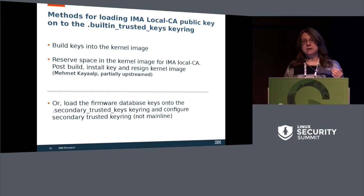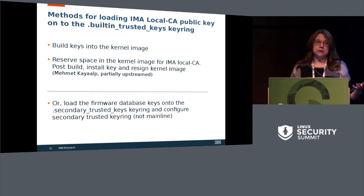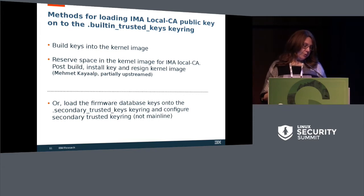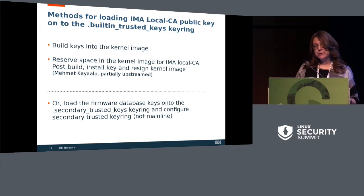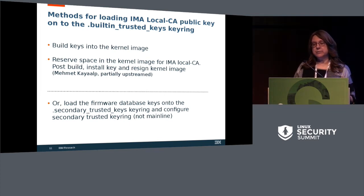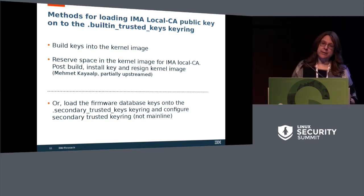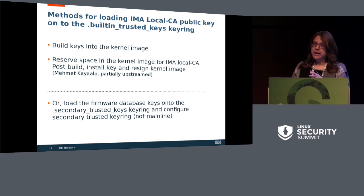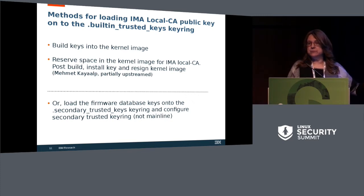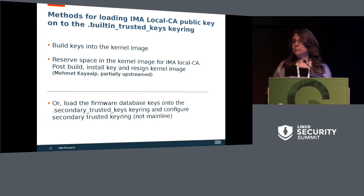Once you've installed the keys, you've modified the kernel image, and therefore need to re-sign the kernel image. The third way of being able to verify keys to put them onto the IMA keyring is not by adding them onto the built-in trusted keys, but by adding them to the secondary keyring. There are out-of-stream patches that do this. But if we bring in all the keys from UEFI, for example, then you're trusting everything that has been run up to this point, and you might not necessarily want to do this. From my point of view, this is not the most optimal way of loading keys onto the IMA keyring.